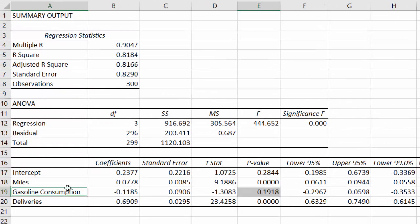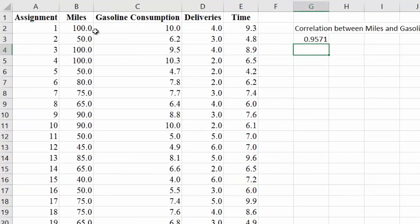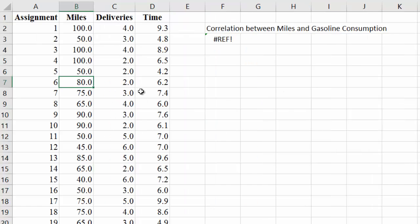So if we have a regression with multicollinearity, that is, x variables that are correlated with each other, then you should take out one of the two x variables that are related. Also, even just by looking at the p-values, we could see we want to remove the gasoline consumption. By removing gasoline consumption, we will make a copy of the data and delete the column for the variable that we want to get rid of and then run regression again. So miles and deliveries will be the two x variables and then time will be the y variable.